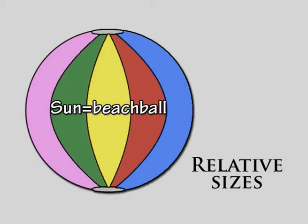If the Sun was the size of a beach ball, then the Earth would be about the size of a pea and the Moon would be the size of a bead, one quarter of the size of the pea.